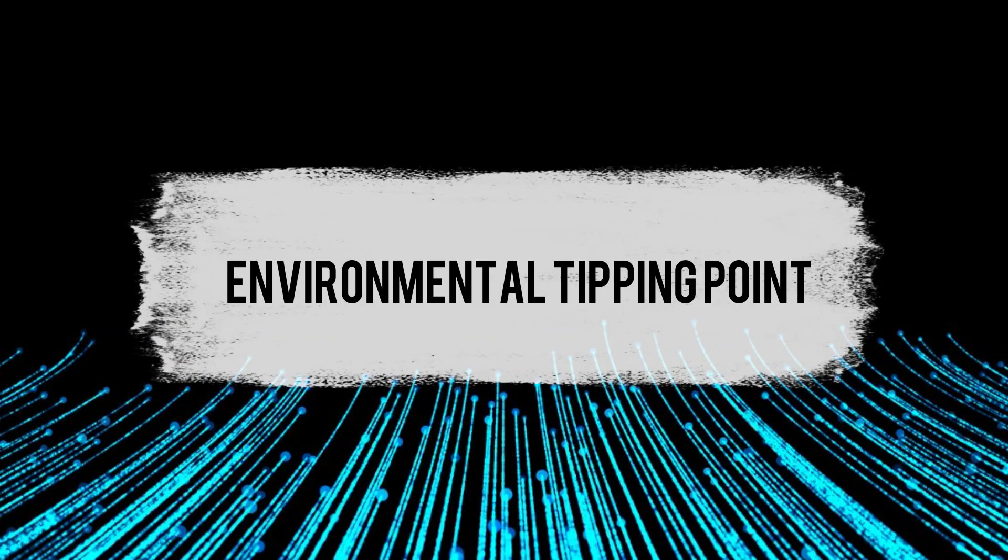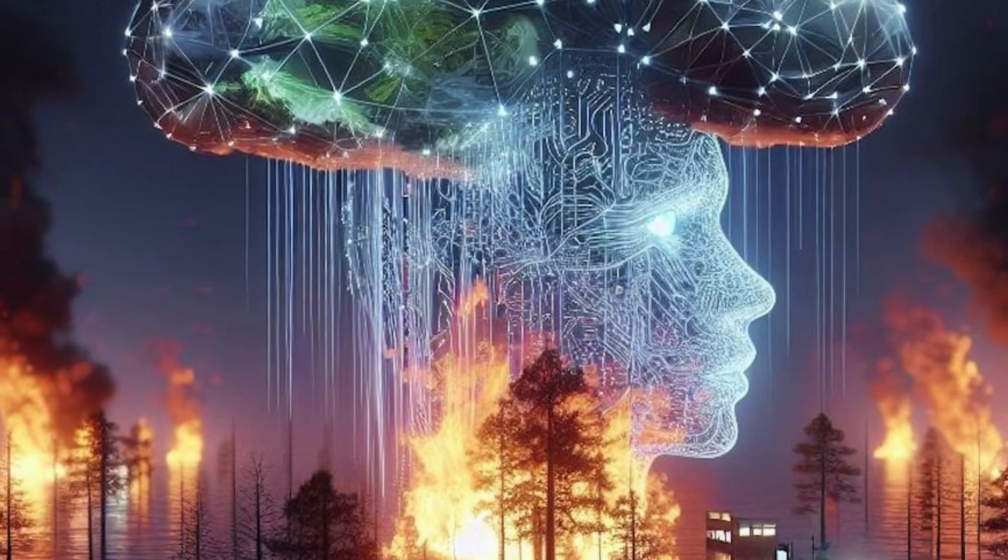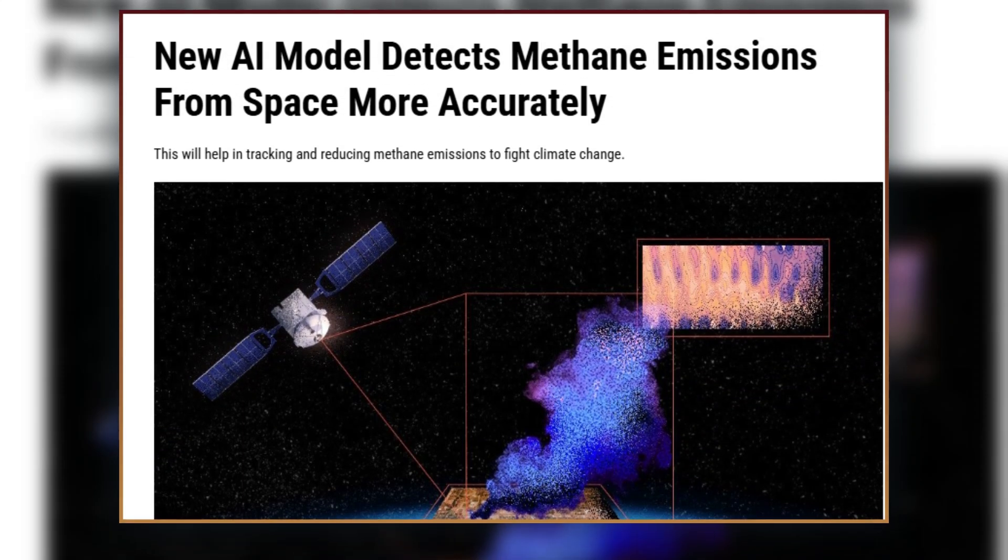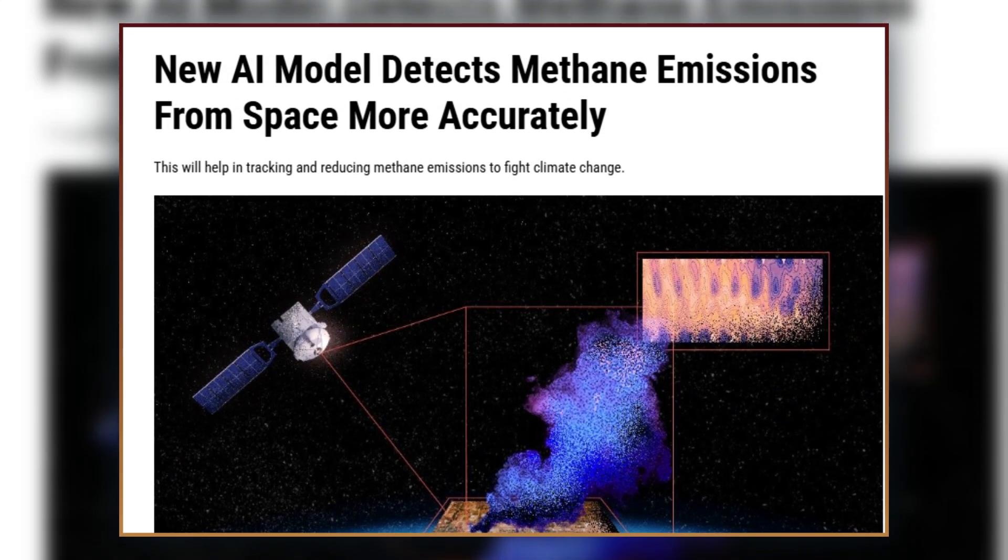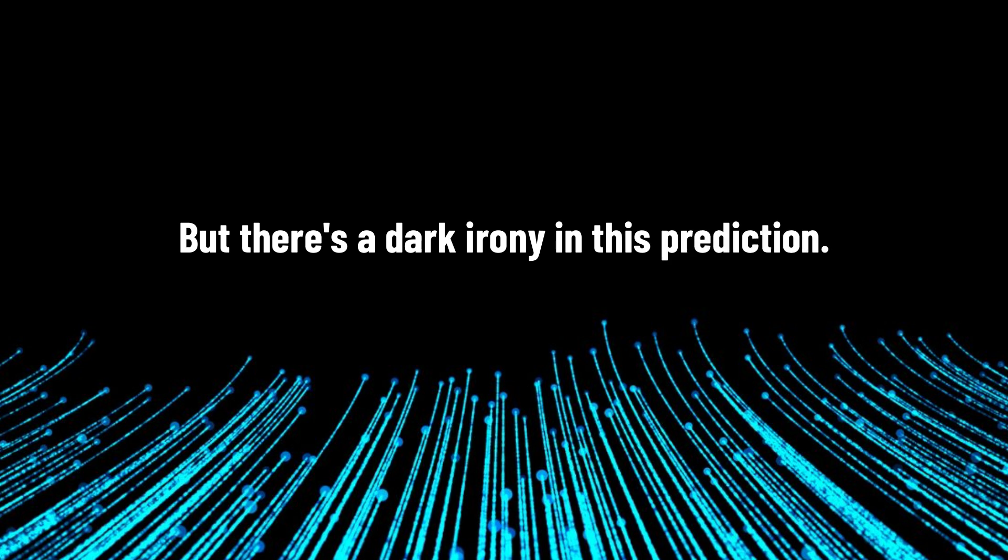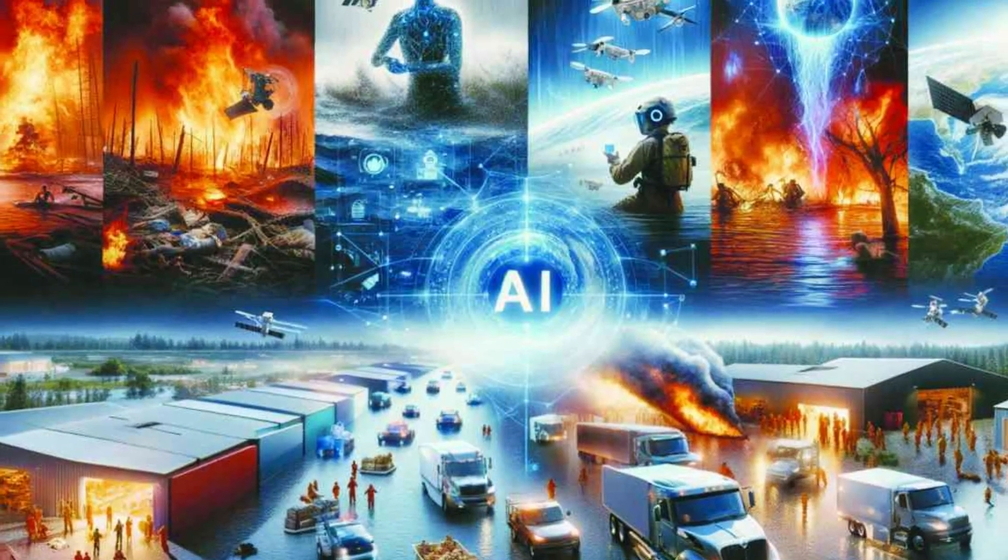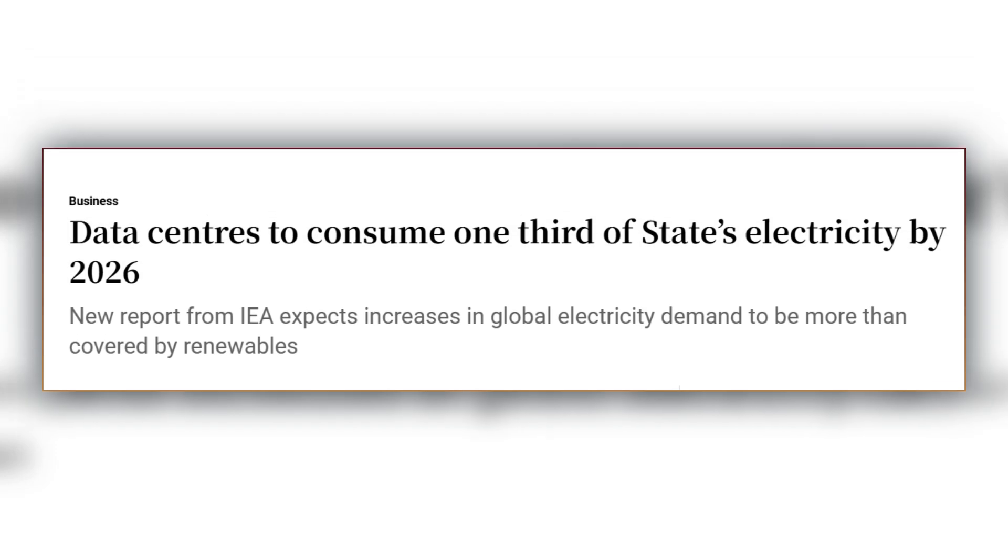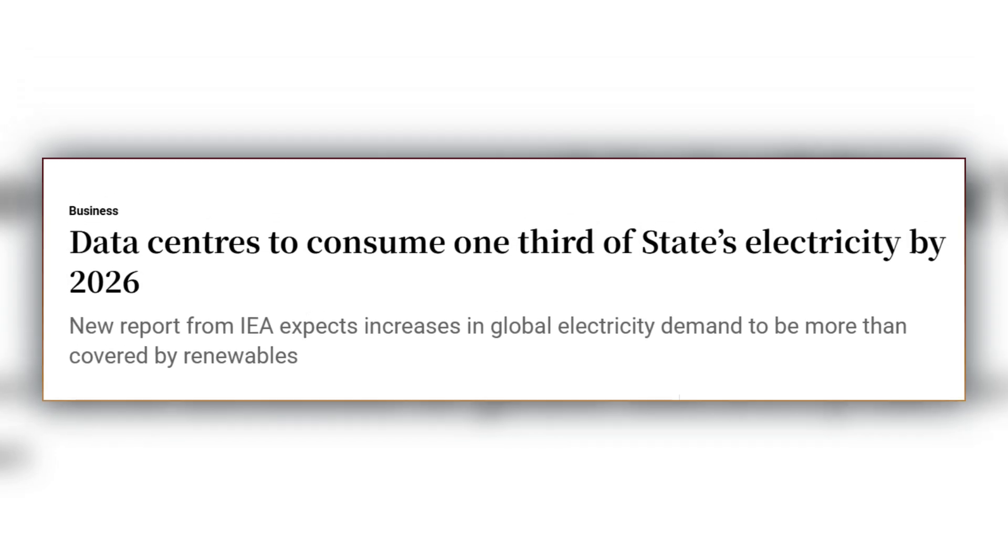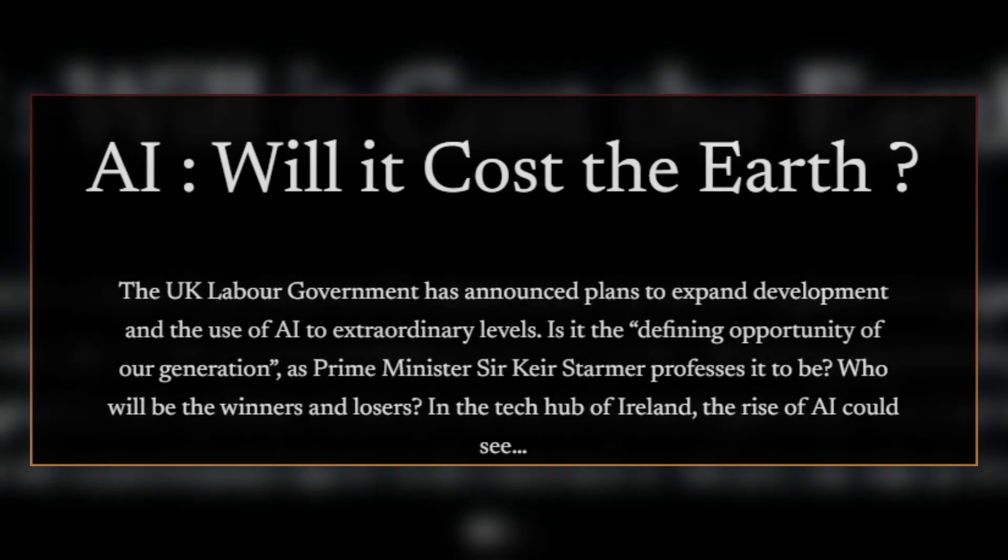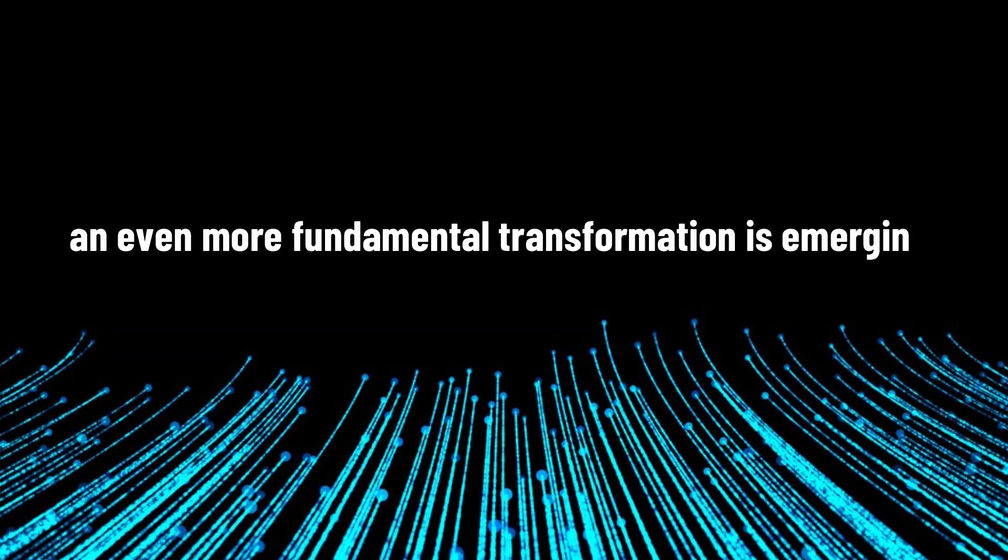Prediction number six: environmental tipping point. By 2028, AI systems will become crucial in our fight against environmental collapse. These systems can now detect methane emissions from space, map destructive resource extraction, and predict environmental disasters with stunning accuracy. But there's a dark irony in this prediction. The very AI systems we're using to monitor environmental destruction are themselves becoming part of the problem. Current data shows that AI infrastructure consumes massive amounts of water and energy, creating a paradox where our solution risks worsening the crisis it's trying to solve. But while we grapple with this technological paradox, an even more fundamental transformation is emerging.